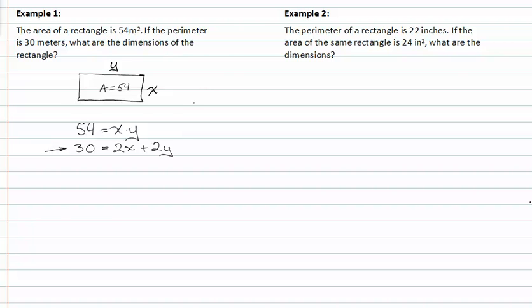By dividing everything by two, we could get y by itself with no factors attached to it. So we get fifteen is equal to x plus y. Now if I subtract x from both sides, I get y is equal to fifteen minus x.